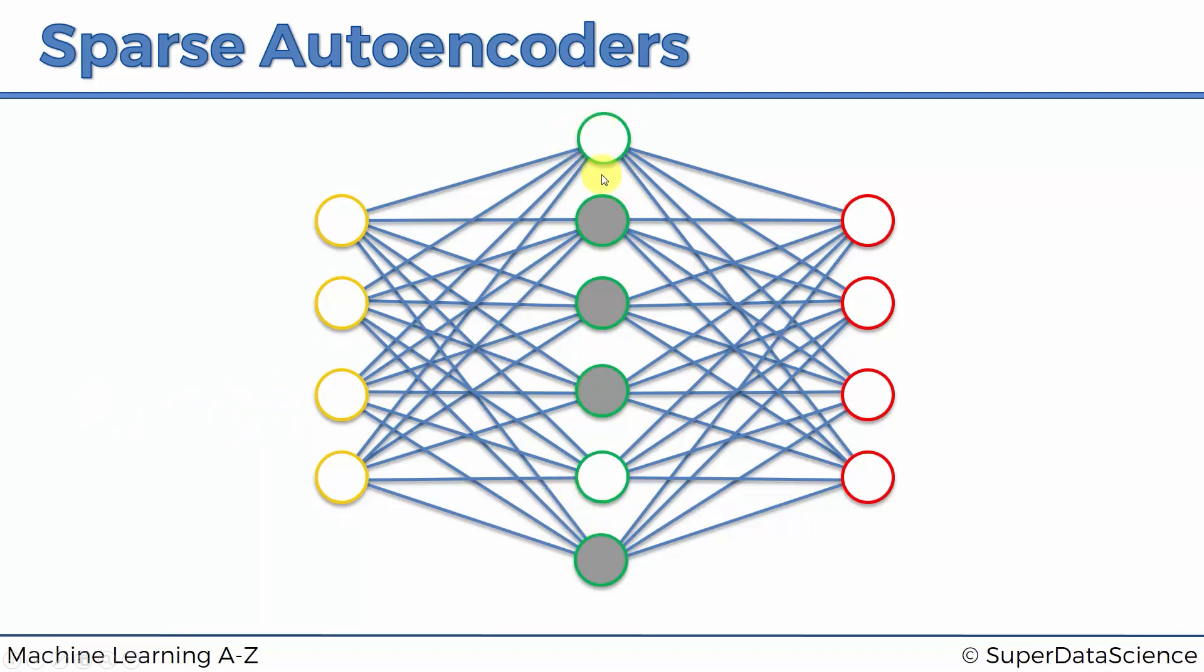For instance, it can use two nodes in this case. When the values go through, these nodes are outputting very tiny values which are insignificant, so only these nodes are actually participating. Then in another pass, these nodes will be participating. Another pass, these nodes will be participating.